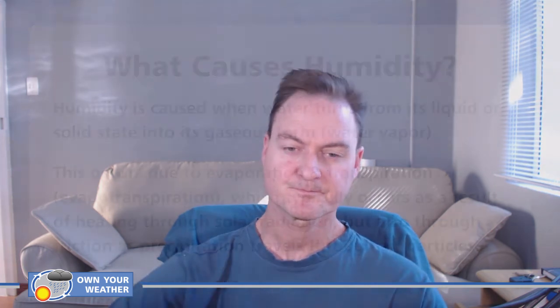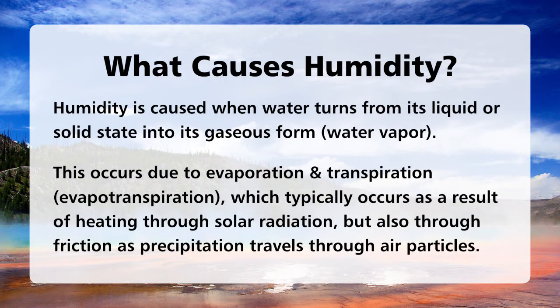What we need to focus on is not just the process through which humidity is caused, but also the sources responsible for creating these processes. Humidity is caused when water turns from its liquid or solid state into its gaseous form — in other words, water vapor. This occurs due to evaporation and transpiration, both referred to as evapotranspiration, which typically occurs as a result of heating through solar radiation, but also through friction as precipitation travels through air particles.